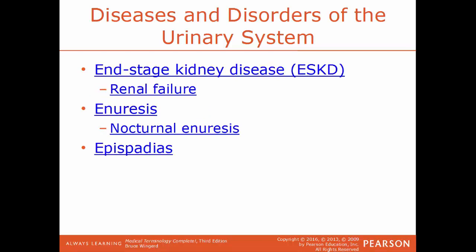ESKD, end stage kidney disease, is a condition where the kidneys are producing a very low amount of urine. This is a very important stage of chronic kidney disease where the risk for congestive heart failure and heart attack is much higher. If this continues, you'll end up with renal failure, which is the complete shutdown of the kidneys.